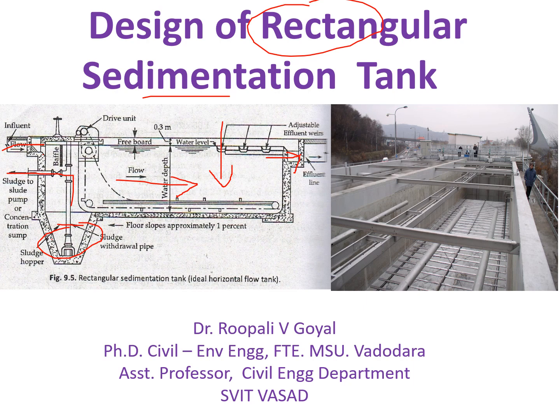So the vertical velocity is related to your SLR, surface loading rate, and that is equivalent to your settling velocity. And when we take horizontal velocity we get a cross sectional area, which means depth into width, that you have to remember.